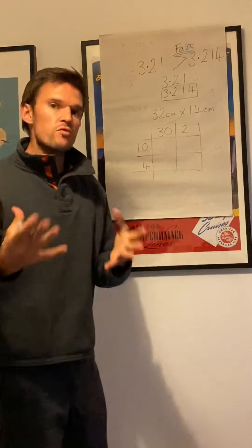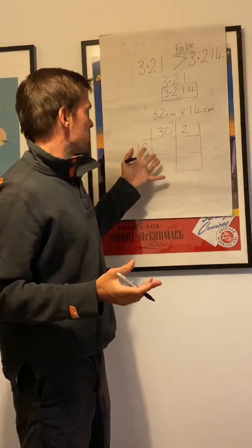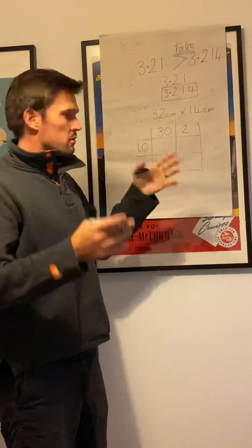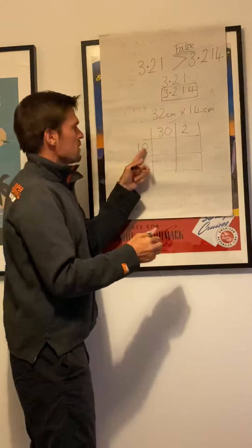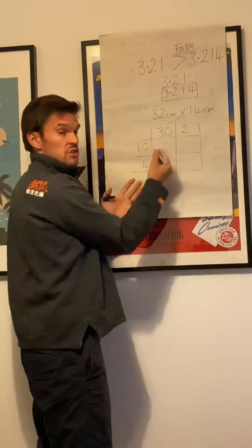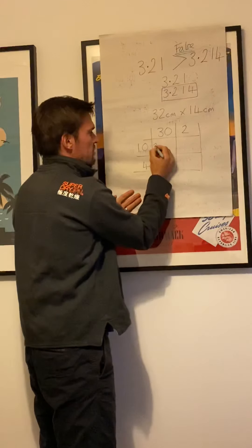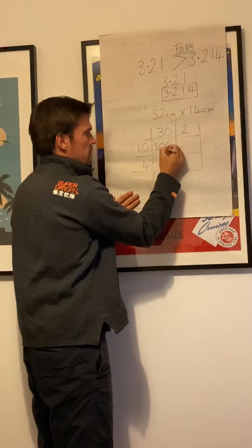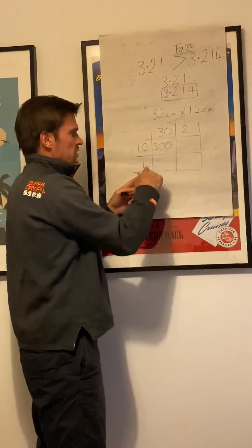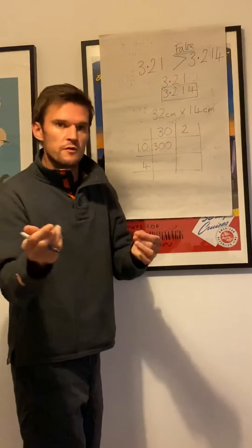When you get really quick at this, you won't even need to write the grid. You could just write the four numbers. 10 times 30 is... 1 times 3 is 3, two zeros, 300. 30 times 4, 3 times 4 is 12, extra zero, 120.